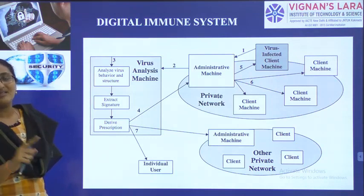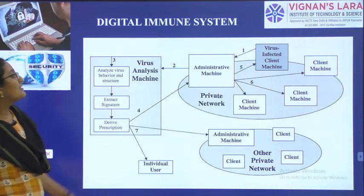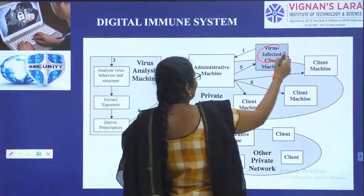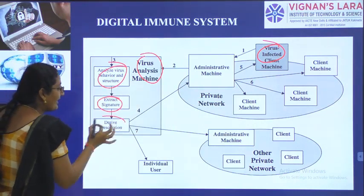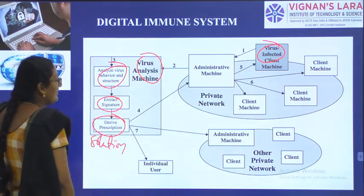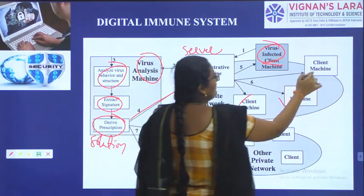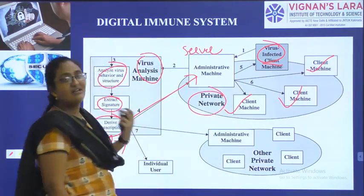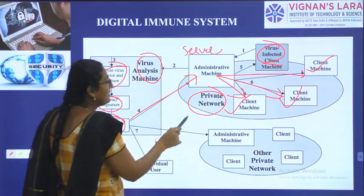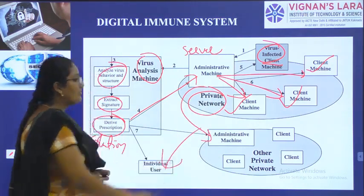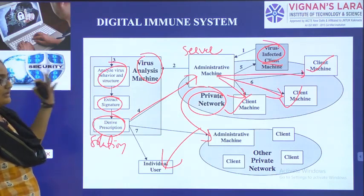Digital immune system — 'immune' means we are trying to give resistance to the virus. Our main agenda is prevention. If prevention is not possible, then identification, detection, and removal. We analyze which system the virus infected, analyze its behavior and structure, extract the signature, find the solution, and tell that solution to the server. The administrator gives that solution to all clients in your network, other networks, and individual users.